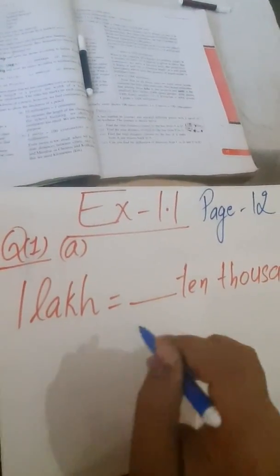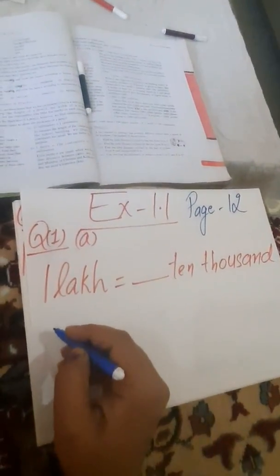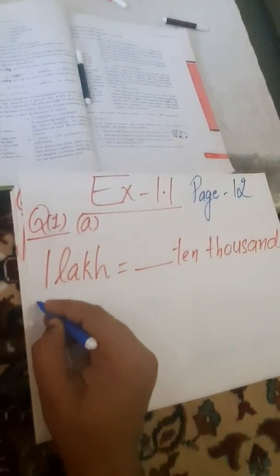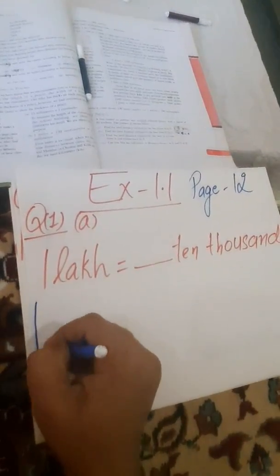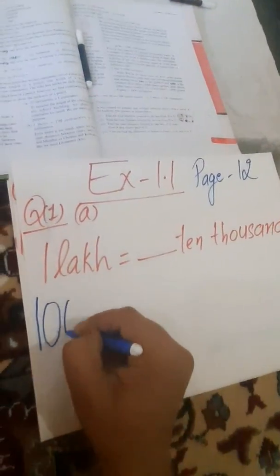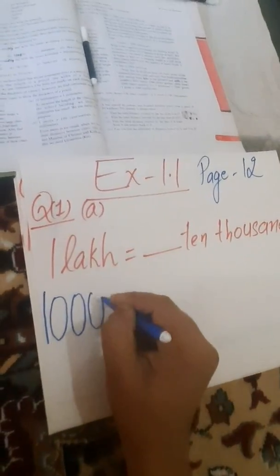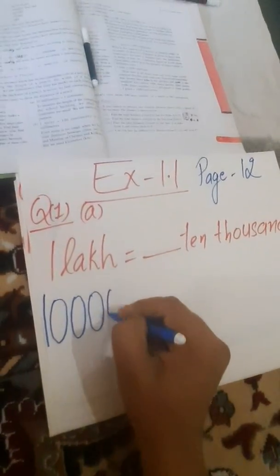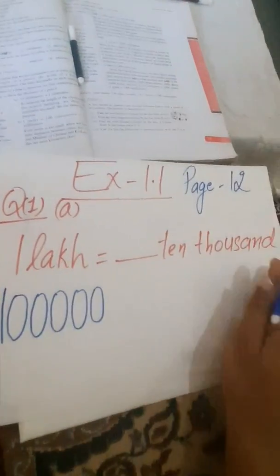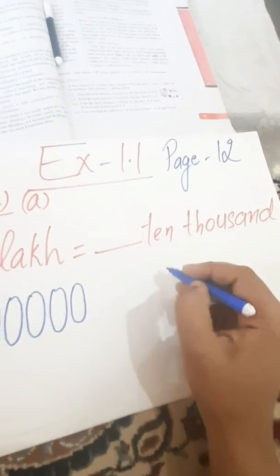The first question is: 1 lakh is equal to how many 10,000s? In 1 lakh, how many zeros are there? There are 5 zeros. So I will write 5 zeros: 1, 2, 3, 4, 5. Then 10,000.